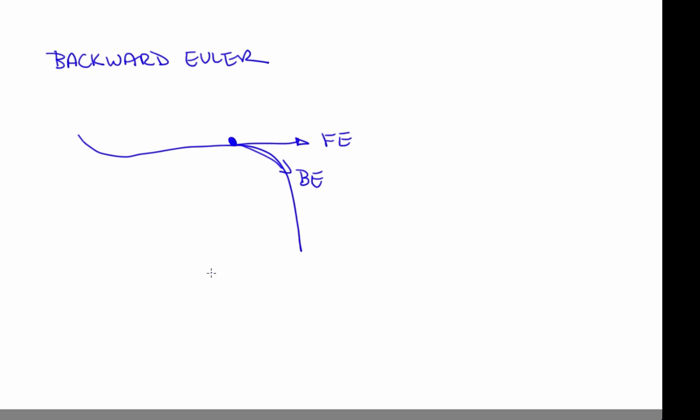What about averaging the two? That is, taking the slope used to take the forward Euler step and the slope used to take the backward Euler step, averaging them, and using that slope to move forwards. That's called the trapezoidal method, and it does better than either forward or backward Euler. Its truncation error is actually order h cubed, because it essentially uses another term in the series. And that's better because h is small, so h cubed is smaller than h squared. All those derivations are what are called local truncation error — that's for one step. Global truncation error for lots of steps is different. There's also a different way to calculate truncation error that gives order h for forward and backward Euler and order h squared for trapezoidal.